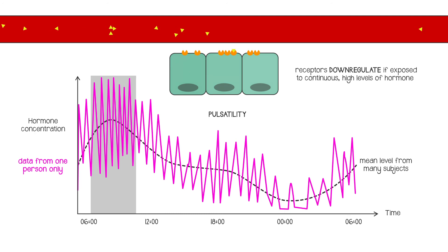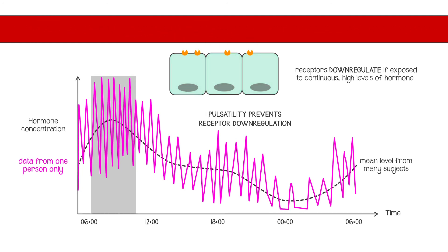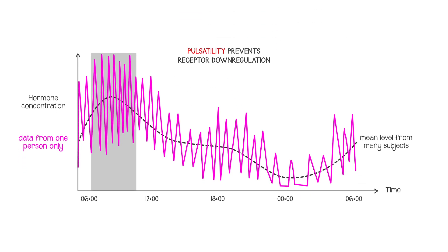It's as if they get bored and wander off. By presenting hormones in pulses, that doesn't happen. So most hormones are produced in a pulsatile way, and overall levels show a circadian rhythm.